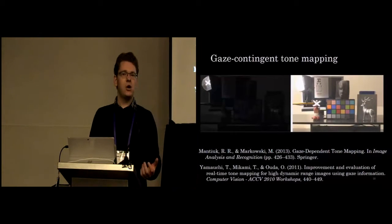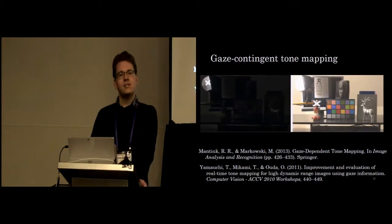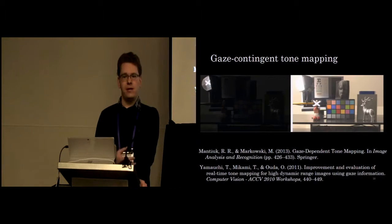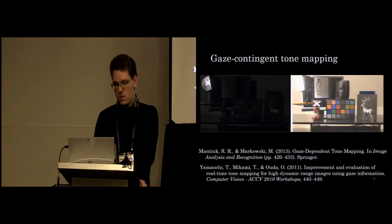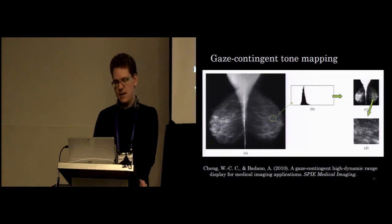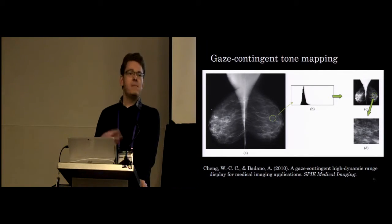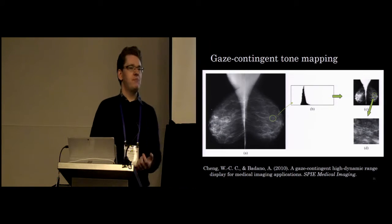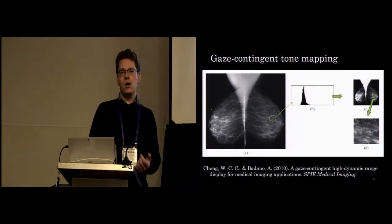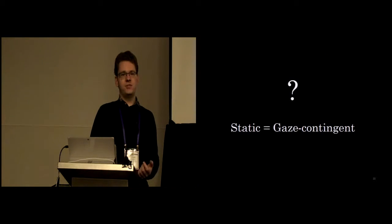This kind of gaze-contingent tone mapping has been proposed before, changing the brightness of an image depending on where you're looking. We can also extend this not just to changing the global brightness, we can also change local detail in different areas of the screen. For medical applications, for example, you can vary which details are available depending on where the observer is looking. But actually, these ideas have been proposed, but we don't actually know how this affects the perception of the observer.